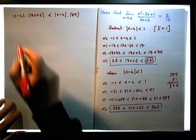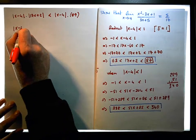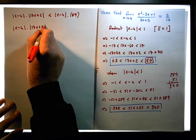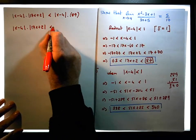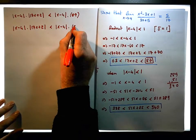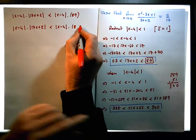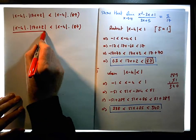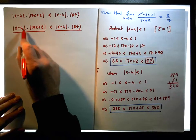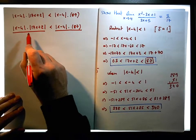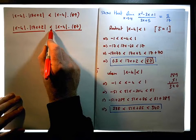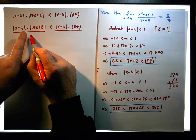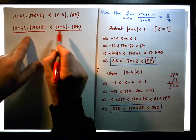Now let's divide. So now what we have is the absolute value of x minus 4 times 17x plus 2, and that's less than x minus 4 times 87. If I divide this by a number, how can I keep this less? I want to divide this by a number and divide this by another number to maintain the inequality — to maintain the less than. So I need to divide this by a number that's bigger than the number over here.